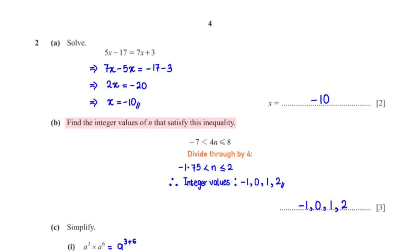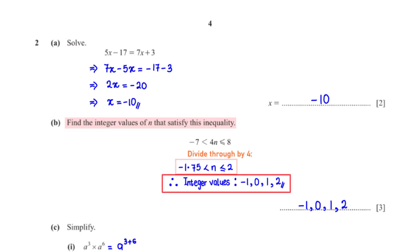Find the integer values of n that satisfy the inequality: 4n is greater than negative 7 and less than or equal to 8. When we divide through by 4, negative 7 over 4 is negative 1.75 and 8 divided by 4 is 2. Therefore, the integer values of n in this range are negative 1, 0, 1, and 2.